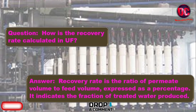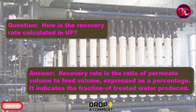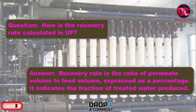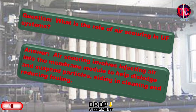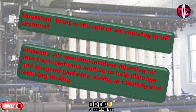How is the recovery rate calculated in UF? Recovery rate is the ratio of permeate volume to feed volume, expressed as a percentage. It indicates the fraction of treated water produced. What is the role of air scouring in UF systems? Air scouring involves injecting air into the membrane module to help dislodge and suspend particles, aiding in cleaning and reducing fouling.